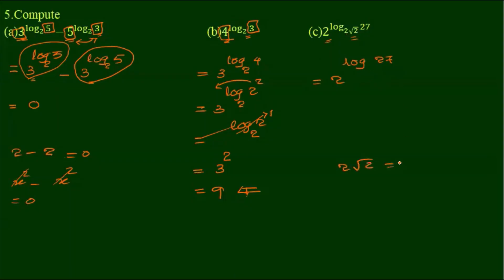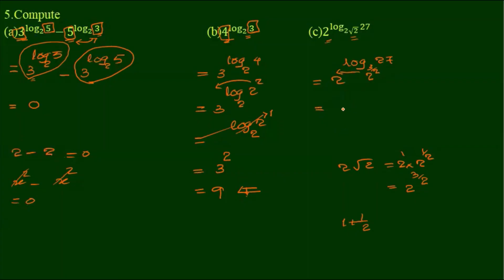2 root 2 is equal to 2; 2 power 1 is equal to 2; root 2 is equal to 2^(1/2). Square root is 1/2, cube root is 1/3, fourth root is 1/4. So 1 by 2 plus 1 by 2 equals 1 plus 1/2 equals 3 by 2. Therefore 2 power 3 by 2.